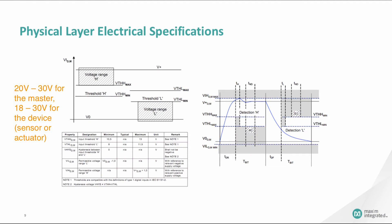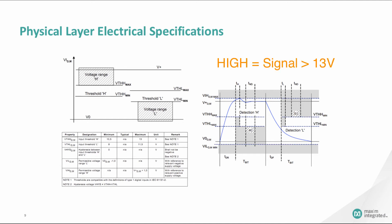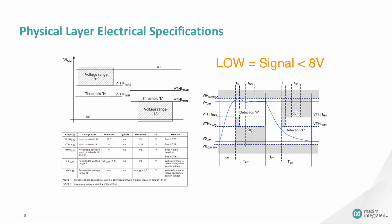The supply range is 20 to 30 volts for the master and 18 to 30 volts for the device. A rising IO-Link signal must go above 13 volts to be registered as a high. A falling IO-Link signal must go below 8 volts to be registered as a low. The high and low detection times — TH and TL in the timing diagram — are at least one-sixteenth of a bit. TND, the noise suppression duration, must be less than one-sixteenth of a bit.